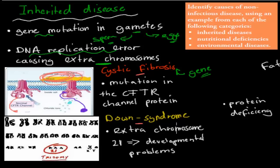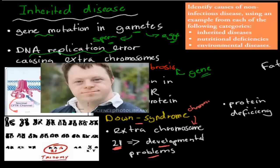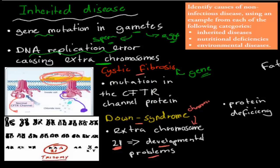Down syndrome is caused by an extra chromosome at chromosome pair 21 — three chromosomes instead of the usual two. This chromosomal error causes developmental problems during fetal development, including slight intellectual disability and characteristic facial features. These are two examples of inherited diseases.